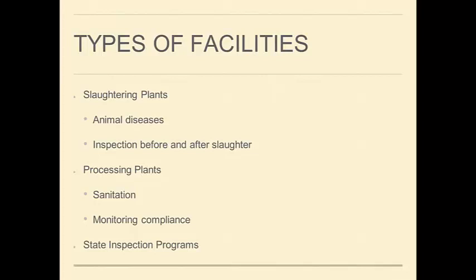There are basically two types of facilities: slaughtering plants and processing plants. In the slaughtering plants, the main things the USDA is looking for are animal diseases — probably the best known is looking for symptoms of mad cow disease — and inspecting the carcass before and after slaughter. To some extent, they are also making sure that the slaughter of the animal is humane, which is something the USDA enforces.